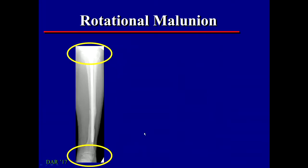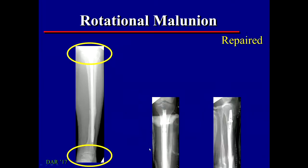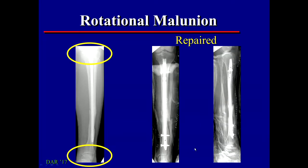Here's another rotational malunion. To fix this, we do an osteotomy of the tibia, rotate it back to normal position, and then internally fix it with an intramedullary nail. Notice at the same time we had to do an osteotomy of the fibula to allow it to rotate as well.